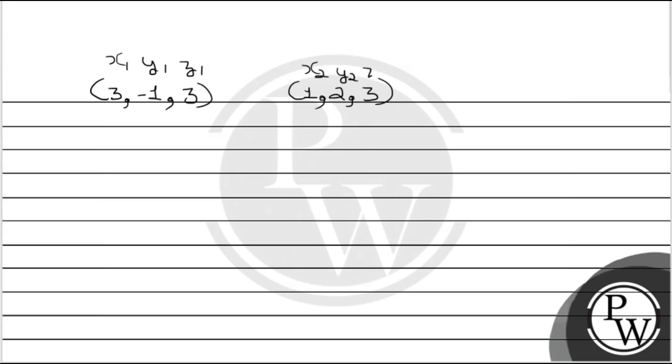Applying the formula: (x-x₁)/(x₂-x₁) which is (x-3)/(1-3), equals (y-y₁)/(y₂-y₁) which is (y-(-1))/(2-(-1)), equals (z-z₁)/(z₂-z₁) which is (z-3)/(3-3).